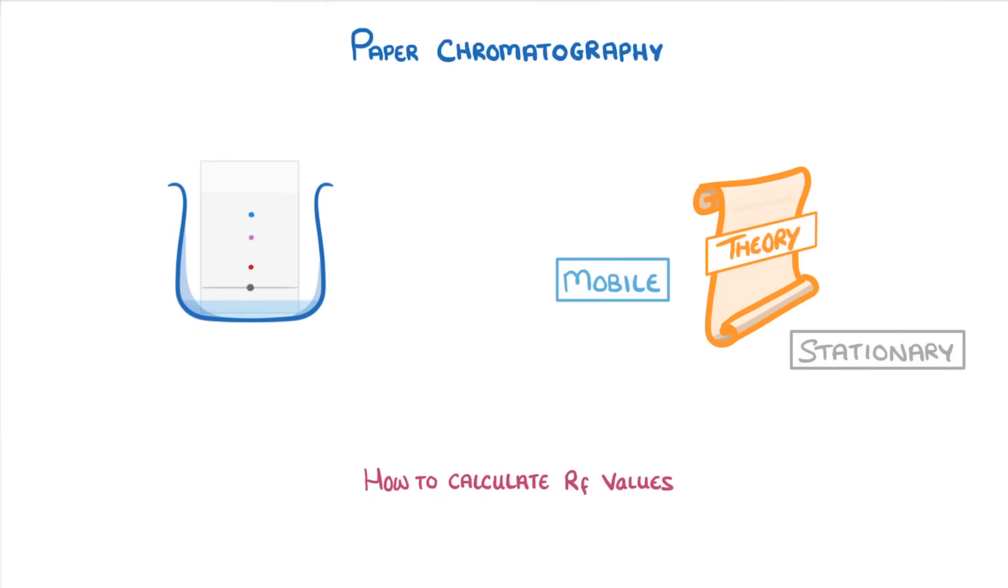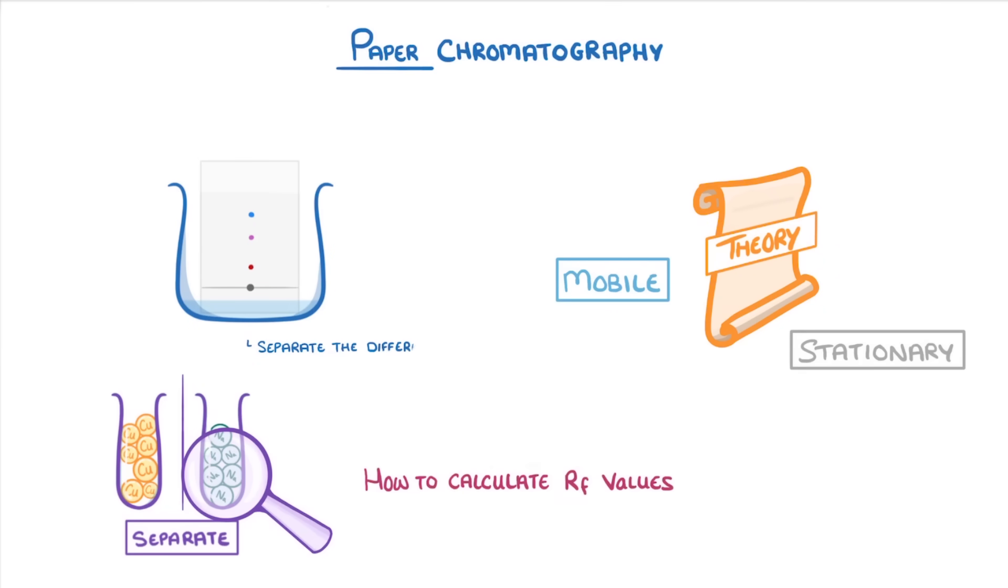Now chromatography is a general analytical technique used to separate the different substances in a mixture so that we can then identify them, and there are actually lots of different types of chromatography. But the one you need to know about is paper chromatography, which can be used to separate the different dyes in an ink.